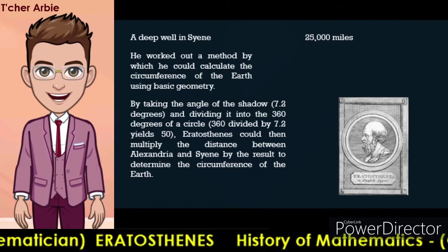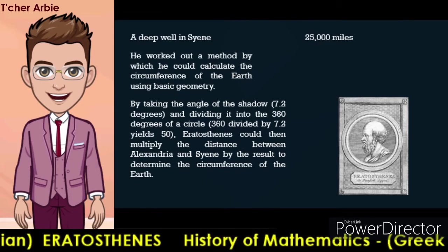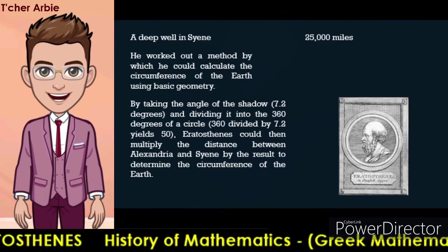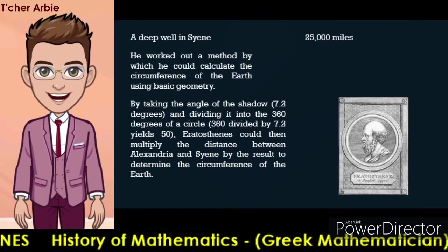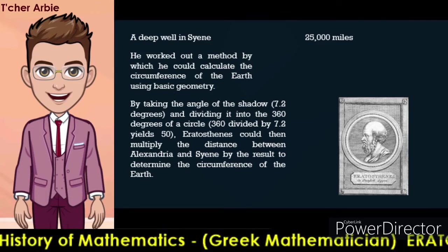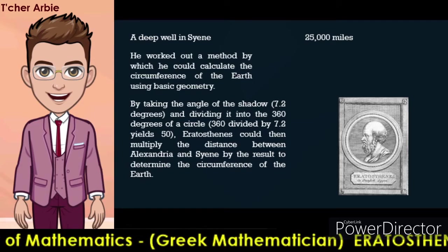Remarkably, Eratosthenes determined the circumference to be 25,000 miles, just 99 miles over the actual circumference at the equator. Although Eratosthenes made a few mathematical errors in his calculations, they cancelled each other out and yielded an amazingly accurate answer that still causes scientists to marvel.